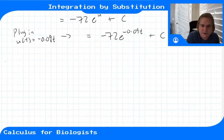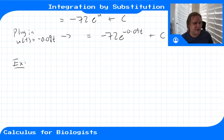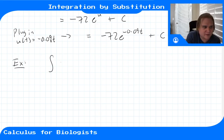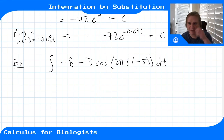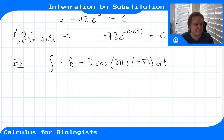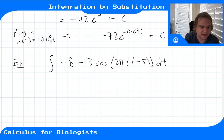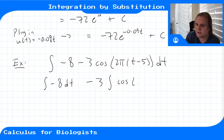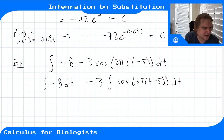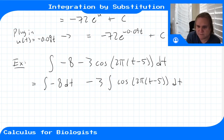Let's do one more example. Say we have the integral of minus 8 minus 3 cosine of (2πt minus 5) dt. Right away I can integrate minus 8, and I know the anti-derivative of cosine, but not with this stuff sitting inside. Let's separate it: minus 8 dt minus 3 times the integral of cosine(2πt minus 5) dt. We don't need u-substitution for the first integral, but we will for the second.